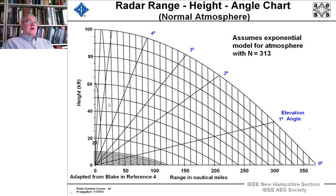One graph which all of us use all the time is if you're at a certain, if a target is at a certain height and you're at a certain range, what is the elevation angle? And this graph was developed again by Blake so that you can see what the range in nautical miles is that you can see a target. So it shows the relationship of radar range, height, and elevation angle for a normal atmosphere where the n, the refractivity, is 313.